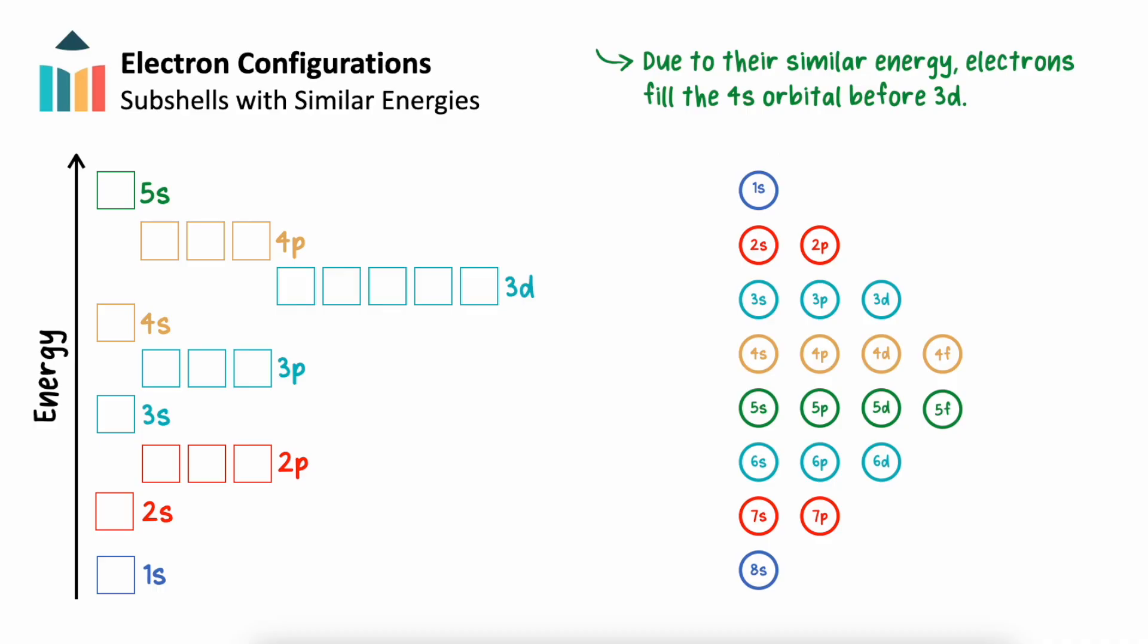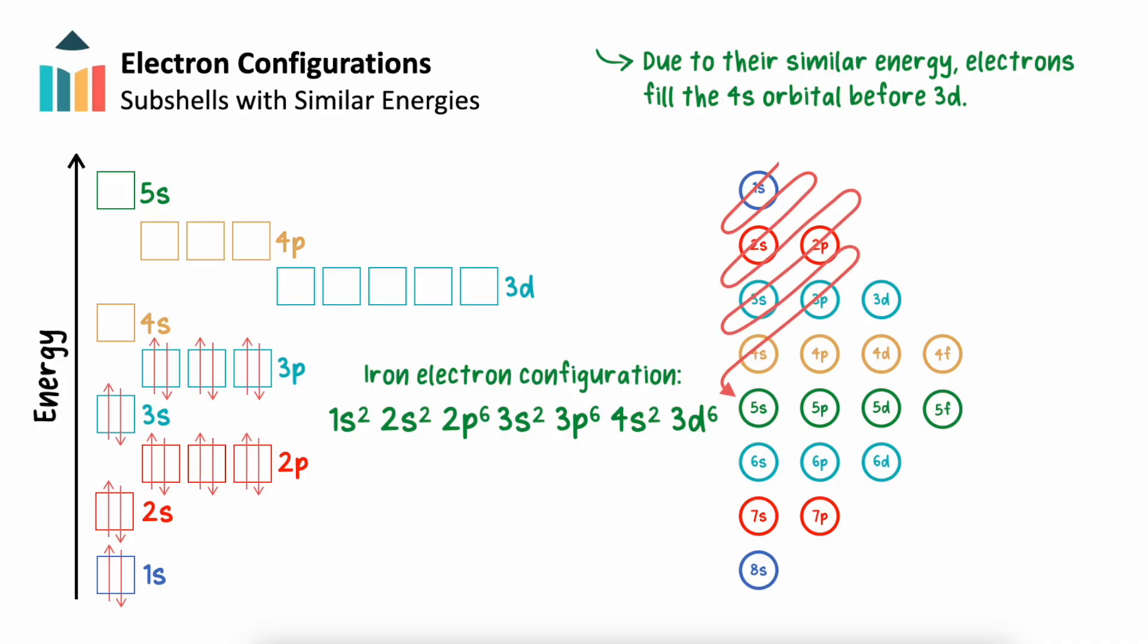Let's test this with iron. Iron has the electron configuration of 1s2, 2s2, 2p6, 3s2, 3p6, 4s2, 3d6.